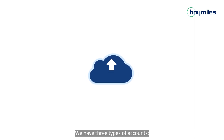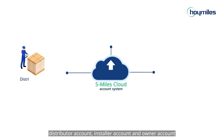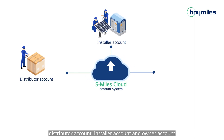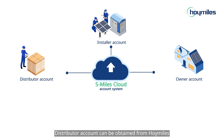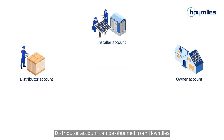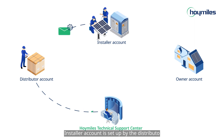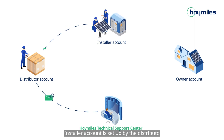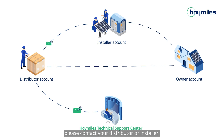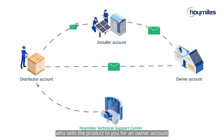There are three types of accounts: distributor account, installer account, and owner account. The distributor account can be obtained from Hoymiles — you can send an email to our technical support center to get one. The installer account is set up by the distributor. If you are the end user, please contact your distributor or installer who sells the product to you for an owner account.